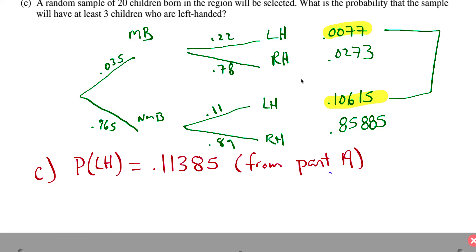Okay, so lastly we're looking at part C. A random sample of 20 children born in the region will be selected. What is the probability that the sample will have at least three children who are left-handed? So from part A, we know the probability of being left-handed is 0.11385. Part C, when I read that, that is a binomial distribution. You're either left-handed or you're not. The probability is pretty much the same, doesn't change. They're independent of each other. Those are the assumptions we make. And then we can do a binomial distribution here.